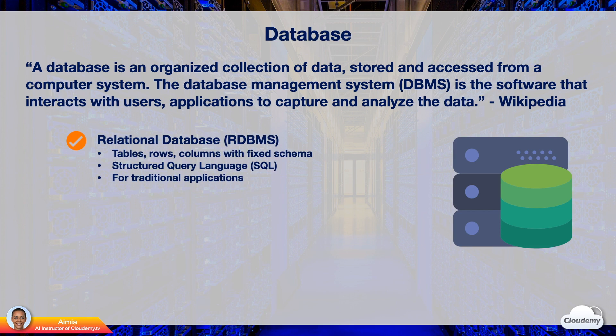RDBMS, or relational databases, comprise tables of rows and columns. Each row is a record; each column is a field or data attribute. A table looks like a spreadsheet with rows and columns. Relational databases require a fixed data schema, which means you have to define a fixed number of columns with predefined data types when you create the table — for example, whether a column should be numeric, text string, or datetime type. RDBMS can only store structured data.